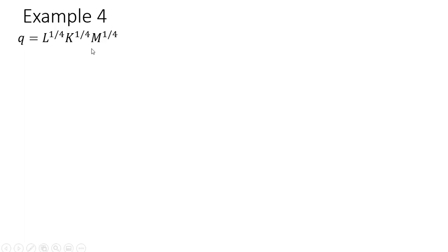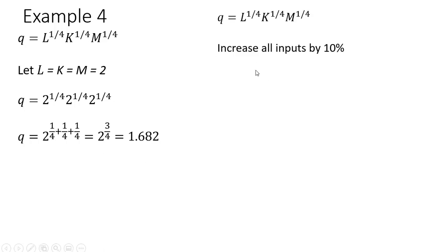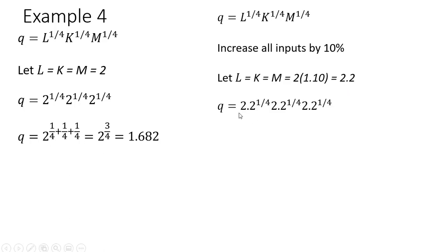Example 4 — we're going to see this has decreasing returns to scale. Evaluating the production function at L, K, and M equals 2, we get 2 raised to the 3/4 power, which is 1.682. Now, instead of doubling all our inputs, let's just increase all our inputs by 10%. So L, K, and M will equal 2 times 1.1, or 2.2. Plugging those values into the production function and simplifying, output is 1.81.